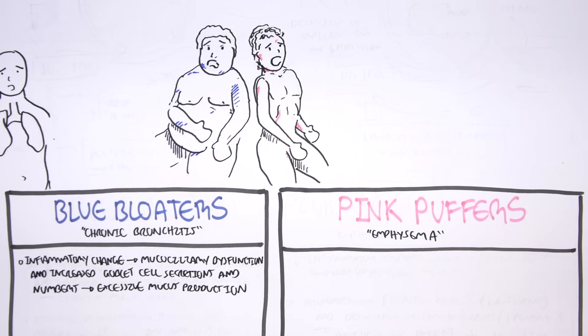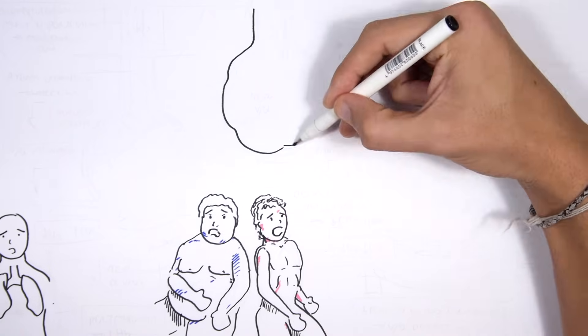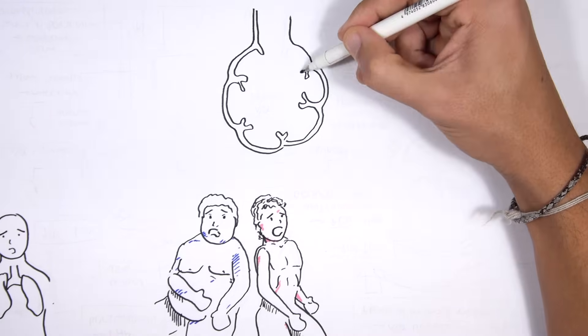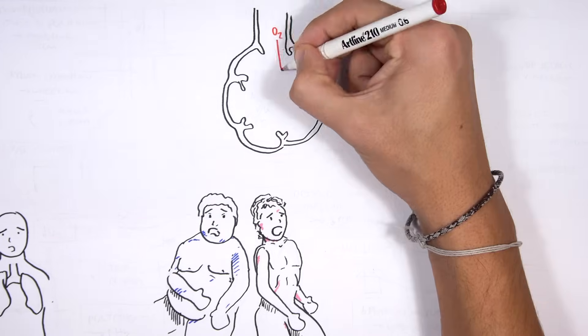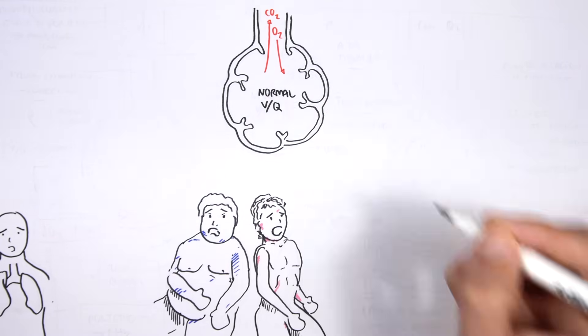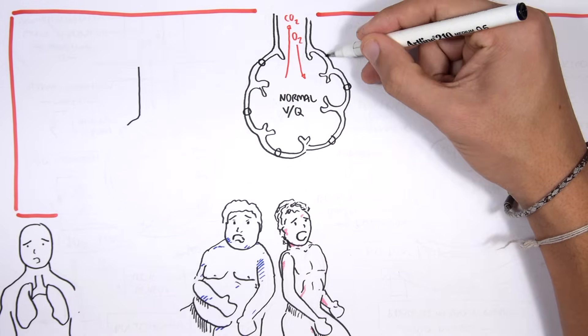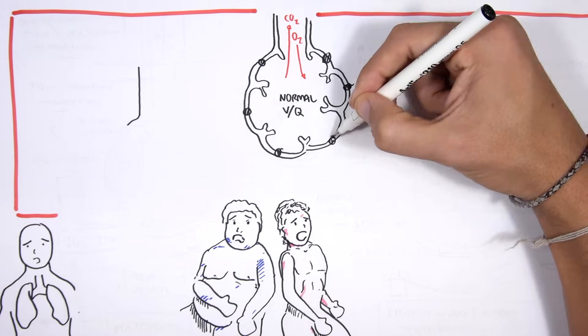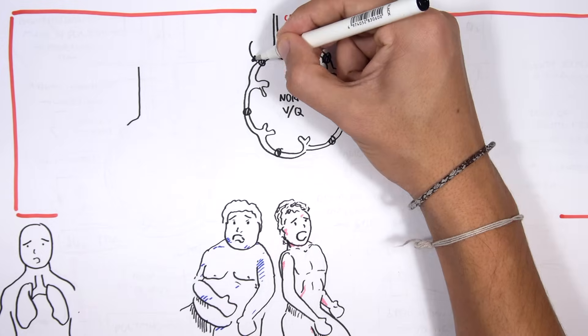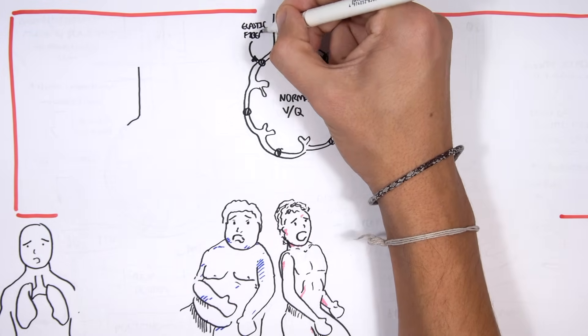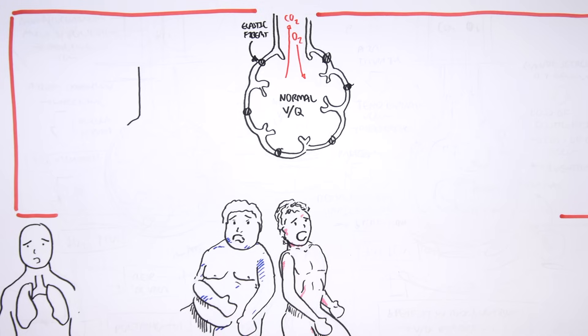If we look at a normal alveoli, it has oxygen coming in and carbon dioxide going out, normal ventilation and perfusion. These are alveoli and it has elastic fibers surrounding the alveoli which is important for the air recoiling during expiration. When you exhale, it recoils back, pushing the air out and we breathe this carbon dioxide out.